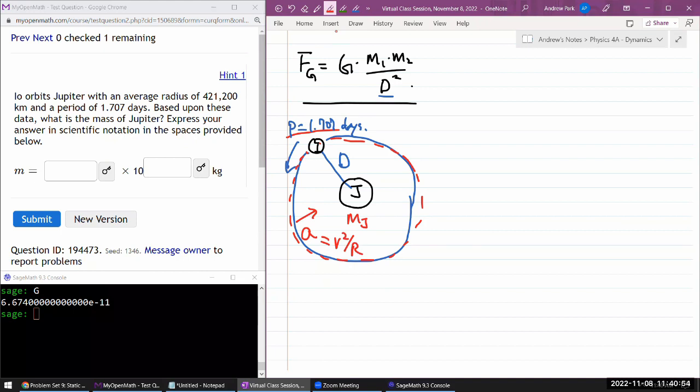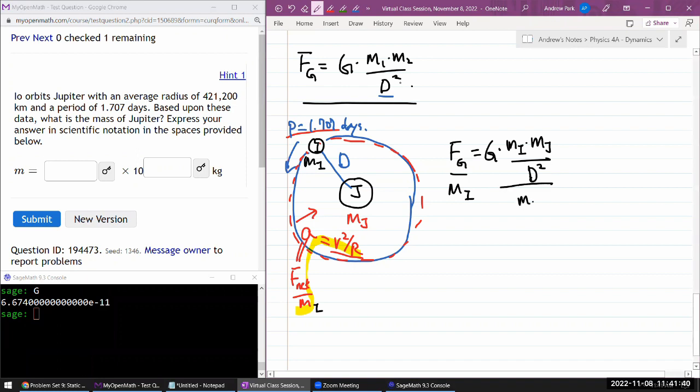So you can relate centripetal acceleration to these kinematical parameters. And you can also relate the centripetal acceleration to dynamical parameters like the net force divided by mass. So let me write out this expression here. Just this equation in a cleaned up version. So the net force here is going to be just the gravitational force. G times mass of Io times mass of Jupiter divided by distance squared. Divide that by mass. Here mass would be mass of Io that we are talking about.